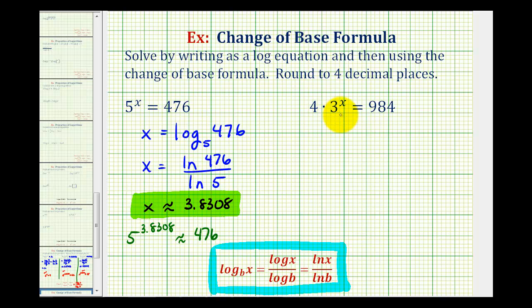Looking at our second equation, our first step is going to be to isolate the exponential part of the equation. We need to divide both sides by 4. So we have 3 to the power of x equals this quotient here. 984 divided by 4 is equal to 246.